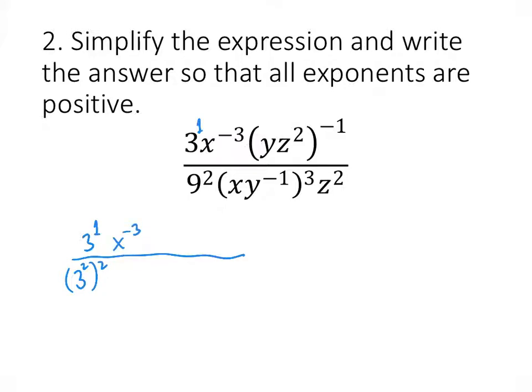We have x to the minus 3. Now whenever we have a product raised to a power, we can raise each of those individual terms to that power. So we have y to the minus 1 and z squared to the minus 1. Similarly on the bottom, we have x cubed and y to the minus 1 cubed, and then z squared.